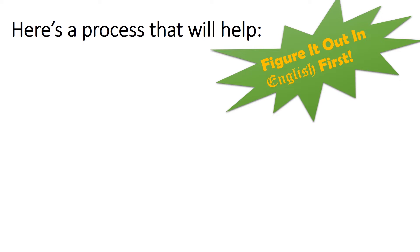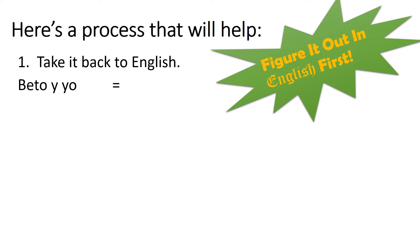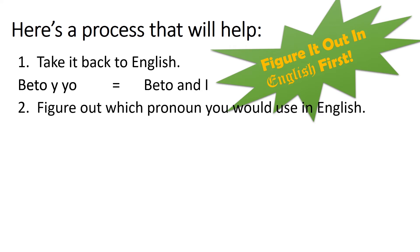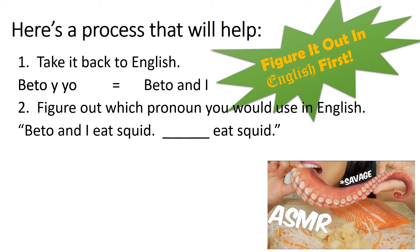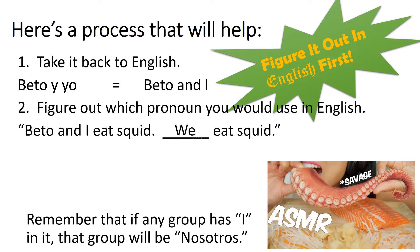Alright, the first thing is to take it back to English. Let's say you got a group like Beto y yo. Well, take that to English and you got Beto and I. Now that you got it in English, figure out what pronoun you would use in English to talk about that group, Beto and I. Say I've got a sentence: Beto and I eat squid. What pronoun would I use? Blank, eat squid. Let's see — Beto and I — how about we eat squid? There you go. Piece of cake.